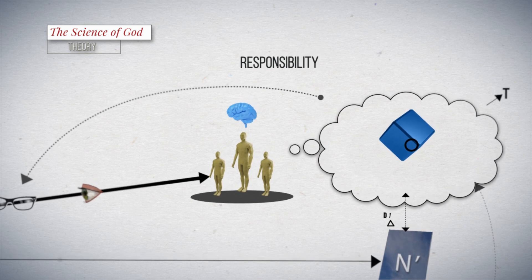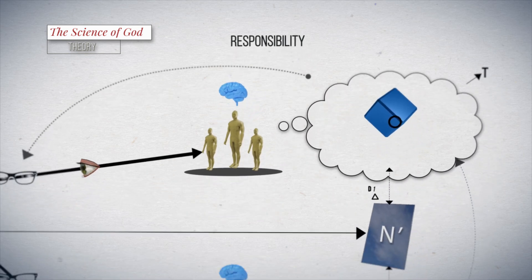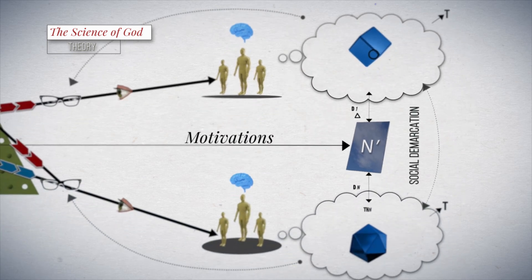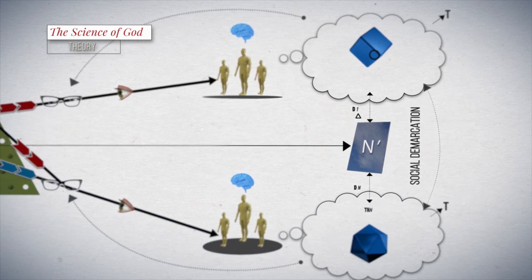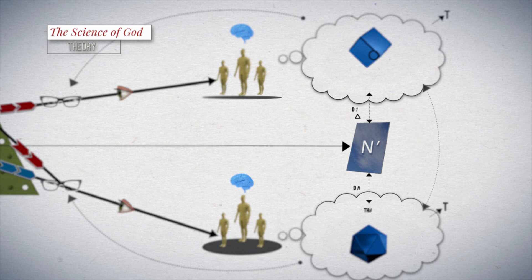Therefore, McGrath points out that theorizing has as one of its motivations the social demarcation of a community in relation to other traditions. However, besides being responsible, theories ought also to be responsive in the sense of responding faithfully to the external reality.